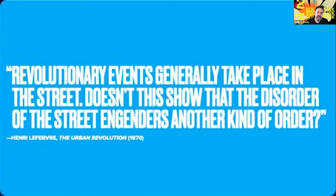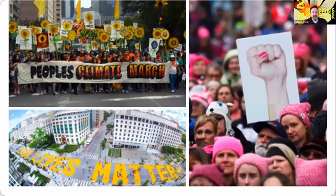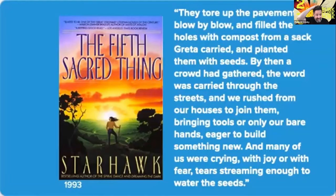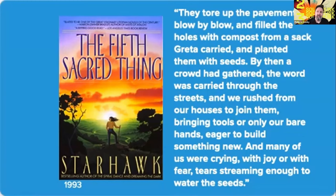revolutionary events generally take place in the street. We've of course seen this throughout history and especially over the past several years in massive protests in support of Black Lives Matter, reproductive rights, climate justice, and countless other popular movements. And if we look at the proto-solarpunk novel The Fifth Sacred Thing by Starhawk, we see that the rebellion of 2028 in the story actually began when four old women who sparked the rebellion began digging up a street: "They tore up the pavement blow by blow and filled the holes with compost and planted them with seeds."